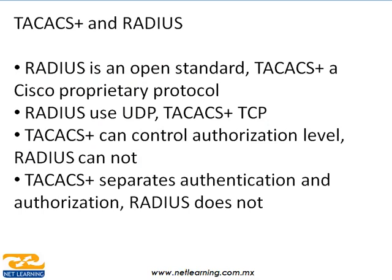Un servidor de ACS puede ser usado como servidor TACACS, como servidor RADIUS, o como los dos al mismo tiempo. La primera diferencia entre TACACS y RADIUS es que RADIUS es un estándar, mientras que TACACS es un protocolo propietario de Cisco. Un servidor RADIUS se puede montar en un Windows Server sin ningún problema; de hecho Windows tiene su servidor de RADIUS como servicio. Otra diferencia es que RADIUS usa UDP y TACACS utiliza TCP. Además, TACACS puede controlar el nivel de autorización del 1 al 15, y RADIUS no puede hacer esto. TACACS separa la autenticación y la autorización, mientras que RADIUS las toma en conjunto.